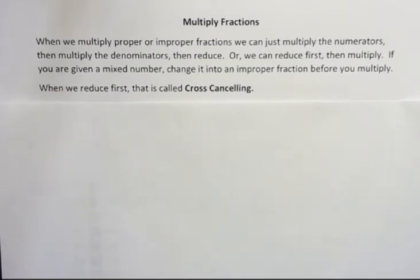When we multiply proper or improper fractions, we can just multiply the numerators, then multiply the denominators, then reduce. Or we could reduce first and then multiply. If you're given a mixed number, change it into an improper fraction before you multiply.